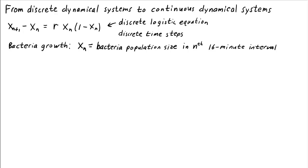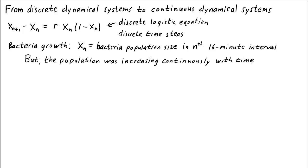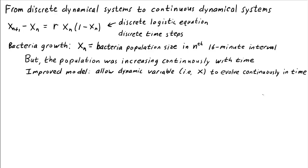In reality, with a large bacteria population, at any moment in time some bacteria were dividing. So what was really happening was that the population size was growing essentially continuously in time. Maybe we can improve our model of bacteria growth by allowing the dynamical variables to vary continuously in time, rather than having the population size jump up every 16 minutes — we could have a model where the population size grows smoothly.